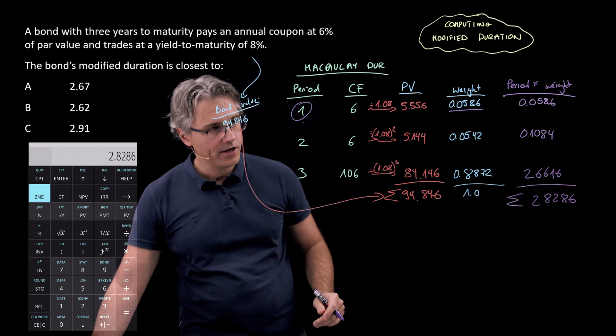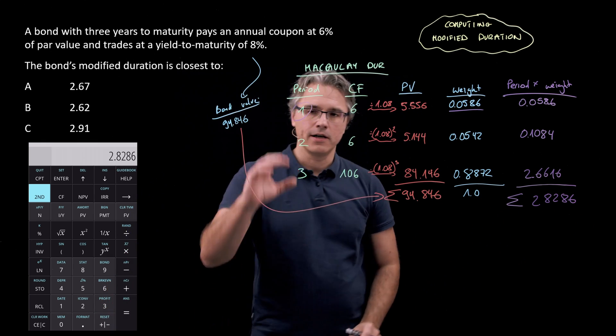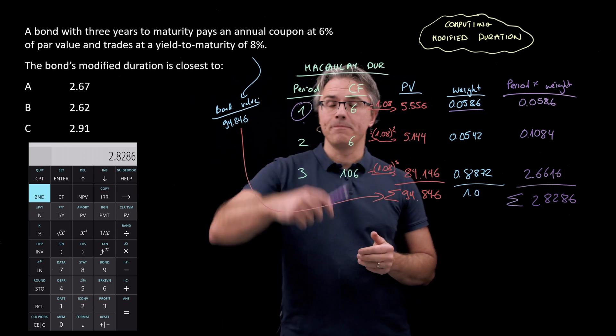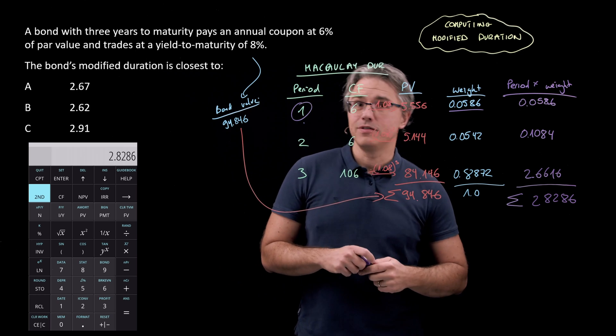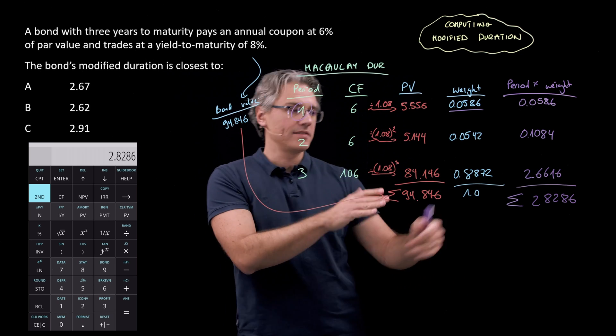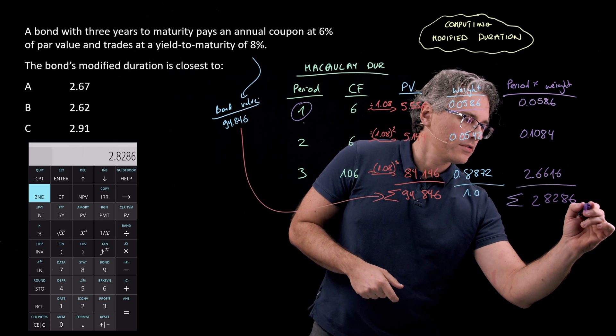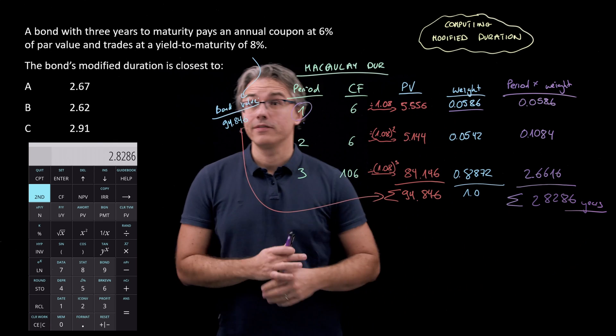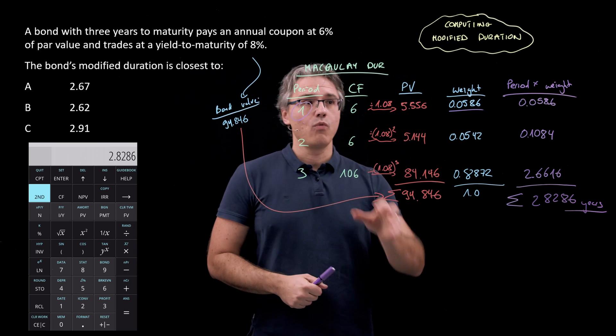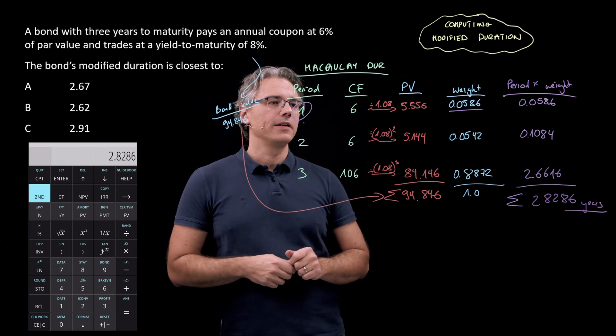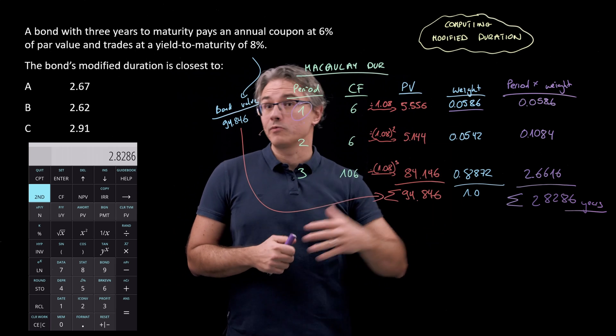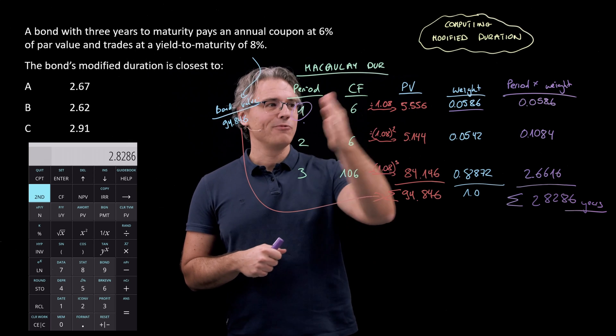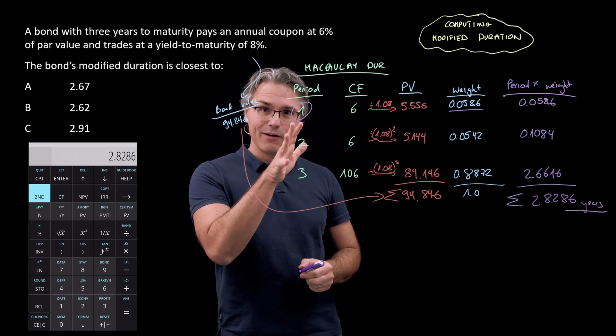Now this is called Macaulay Duration. And what it is showing us is the sort of weighted average in terms of the life of the bond. This is expressed in years in terms of how long we need to wait in order to receive cash flows from the bond. And the cash flows help us derive the weights necessary to weigh the periods.